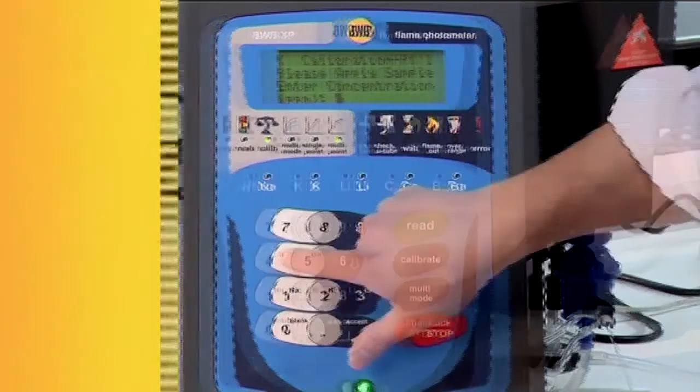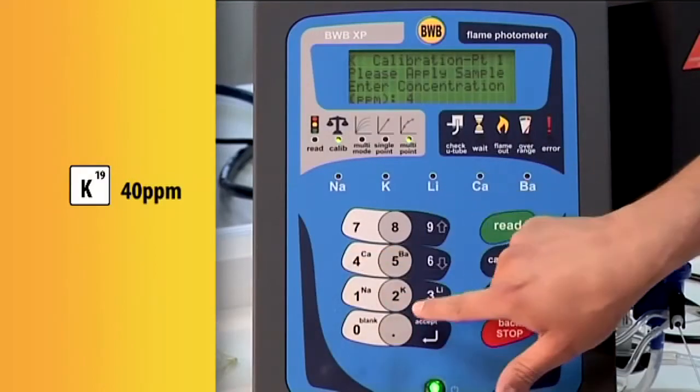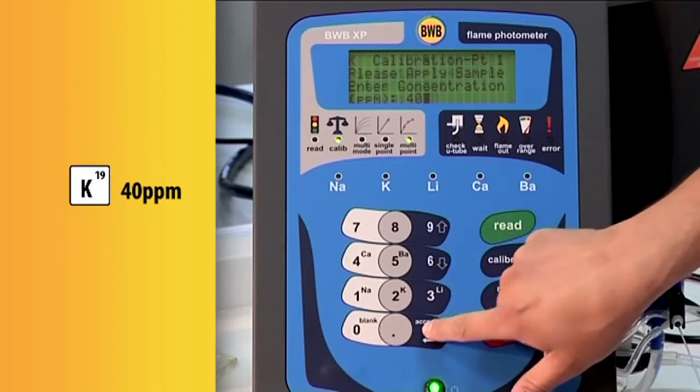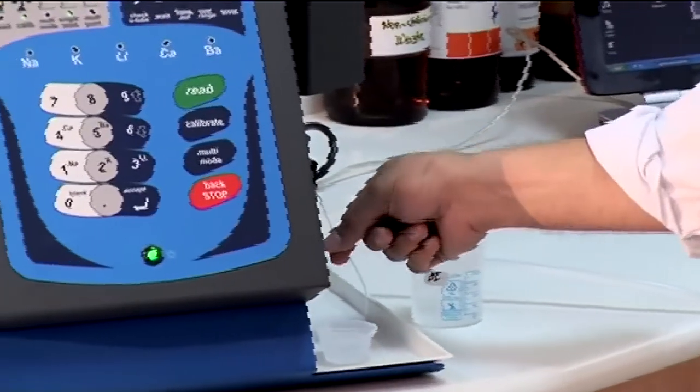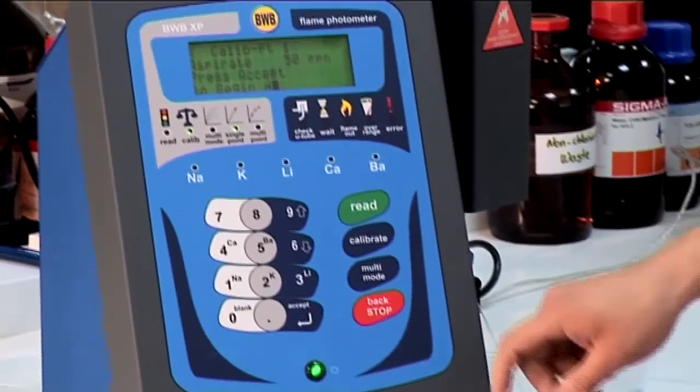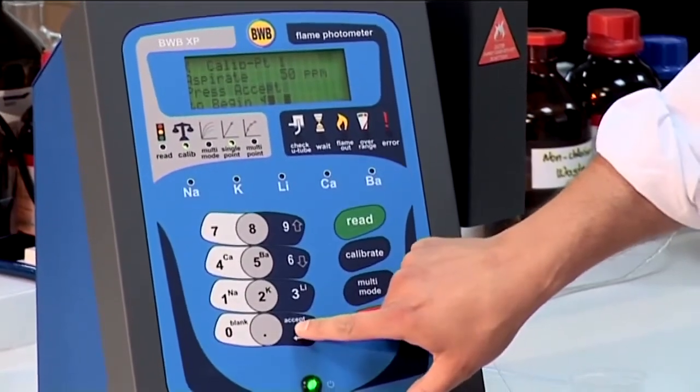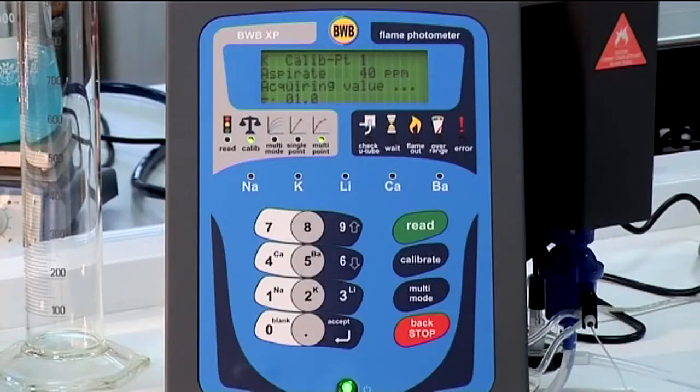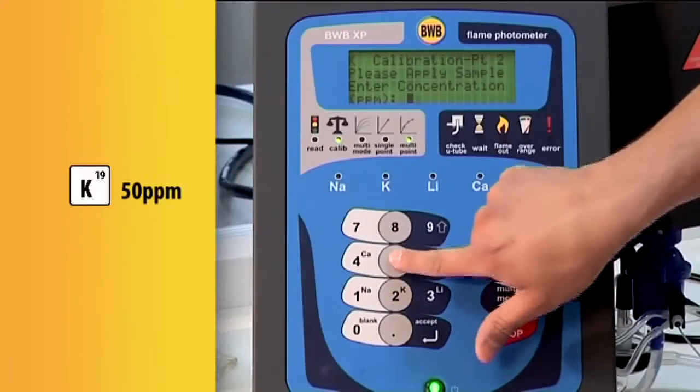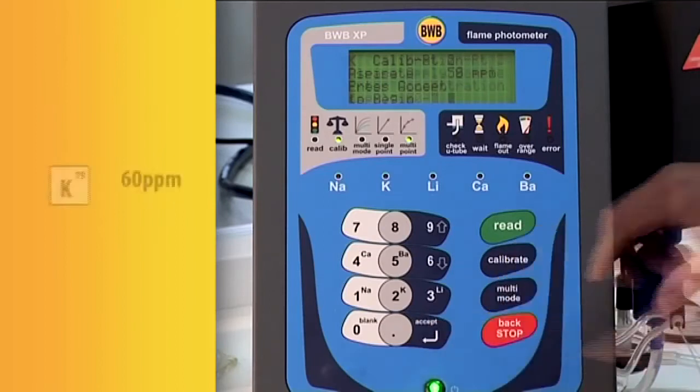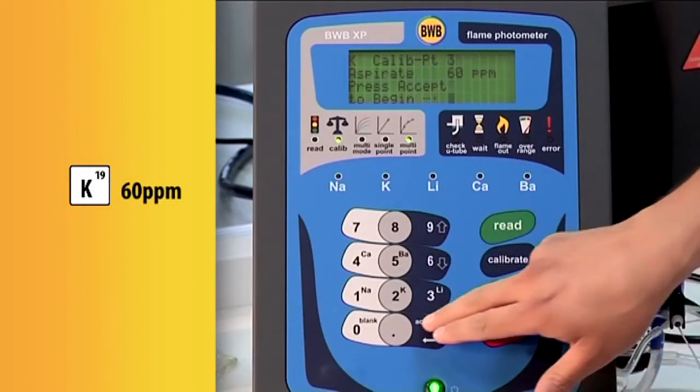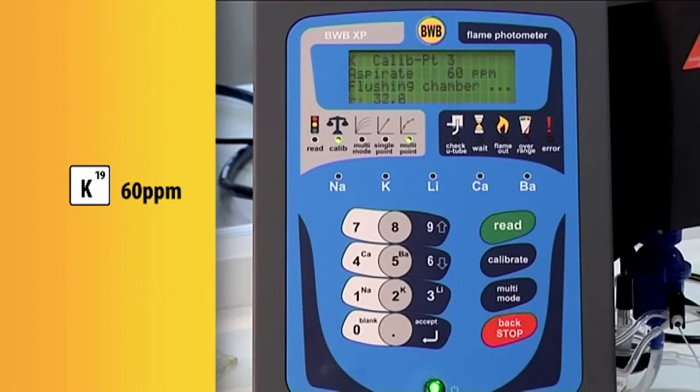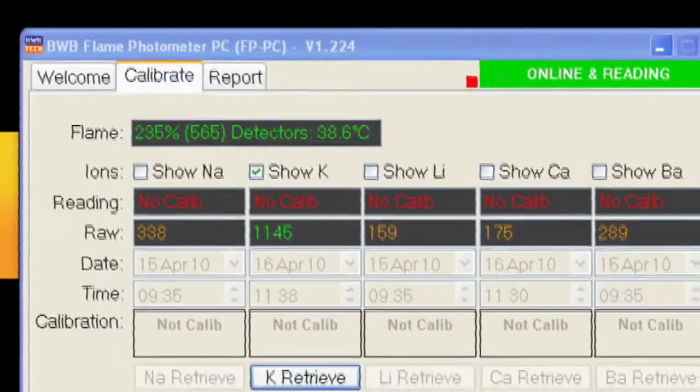For our first standard, key in 40, start aspirating the 40 ppm potassium standard. The next standard is 50 ppm. Key in 50 and aspirate. Our final standard is 60 ppm. Key in and aspirate. We can follow the process along with the FP PC software.